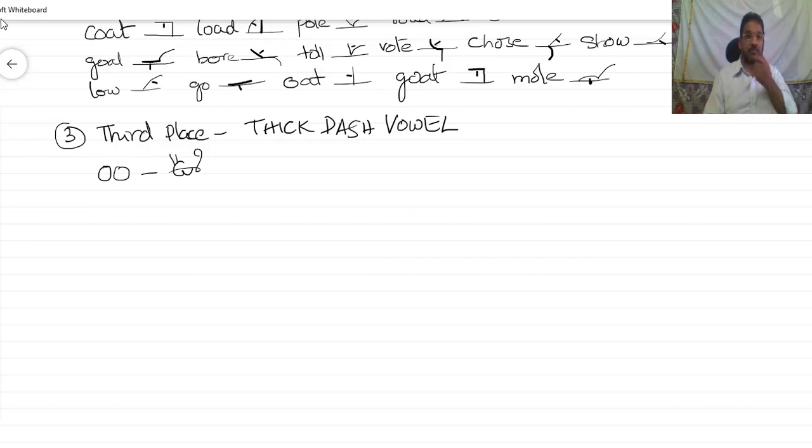Third place, oo. Sound difference: second place versus third place, that is oh versus oo, it is U, right? Z, oo, zu. Stroke Z, zu.